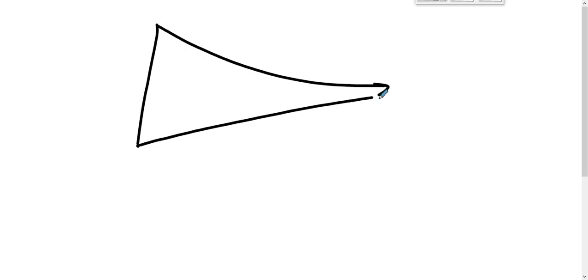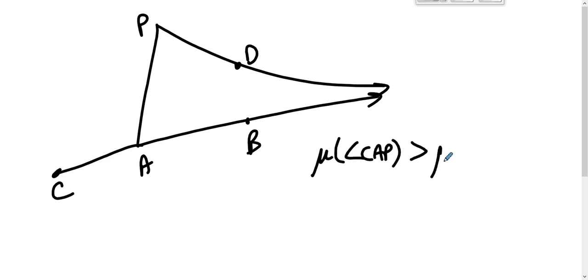If you have an asymptotic triangle DP AB and you find a point C on the other side of PA as B, the measure of angle CAP is greater than the measure of angle APD. This is the exterior angle theorem for asymptotic triangles.